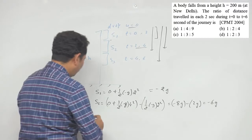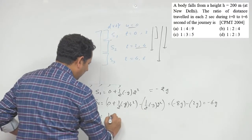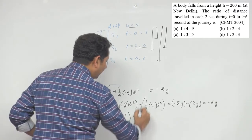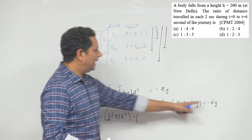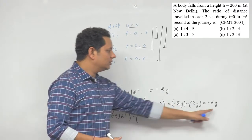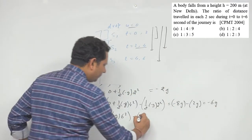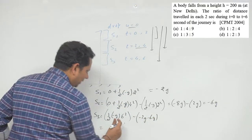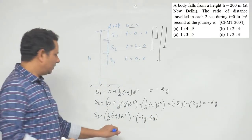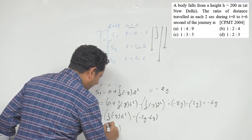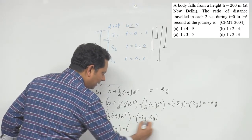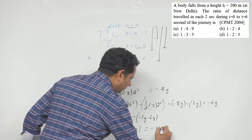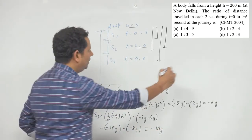S3 will be equal to half G × 6² minus the distances from the first 4 seconds added together. So S3 = half G × 36 = 18G, and subtracting the previous values: 18G minus 8G gives us minus 10G. So the values are: S1 = 2G, S2 = 6G, S3 = 10G.